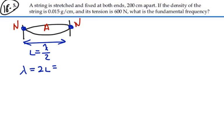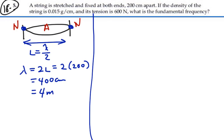So the wavelength of waves on this string is going to be 2 times the length of the string, 2 times 200 cm, which will be 400 cm, or 4 meters. That's the wavelength on this string.